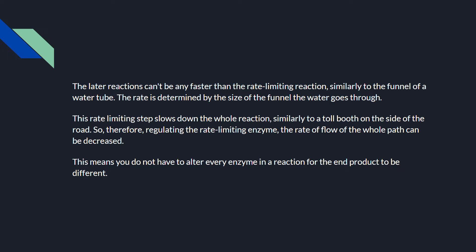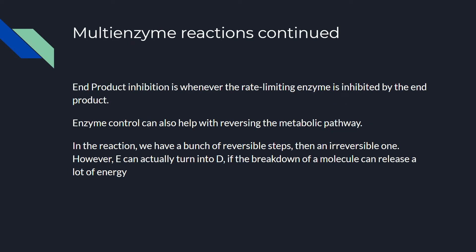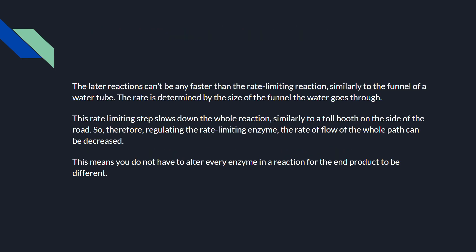Now we'll look at end product inhibition. End product inhibition is when the rate-limiting enzyme is inhibited by the end product. This means if we're going all the way from A to E, the end product is actually a molecule used for the inhibition of the rate-limiting enzyme. This enzyme control also helps with reversing the metabolic pathway and is a form of negative feedback, which is very important in physiology. If the rate-limiting enzyme runs too fast, the rate of flow will be too high, but when the end product comes and inhibits it, the rate returns to normal and equilibrium is achieved.